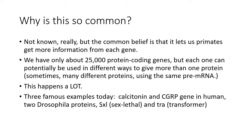This happens really quite a lot in mammalian RNAs. We're going to do a couple of classic examples today. One is the calcitonin and CGRP gene in human, which is spliced to form two different peptide hormones that are active in different cells. And then two Drosophila proteins, sex lethal and transformer, which govern sexual development in flies.